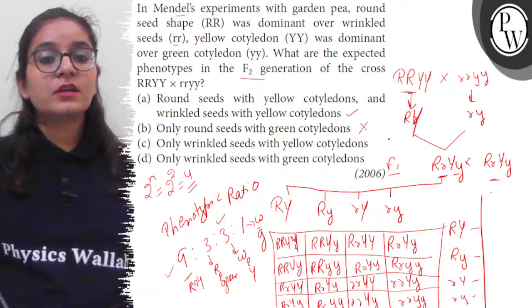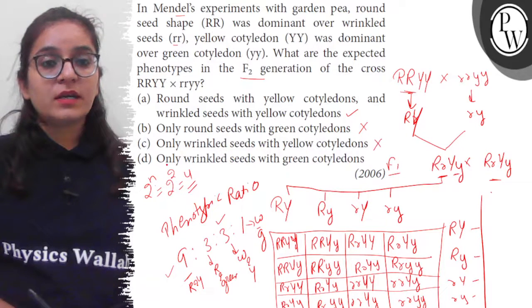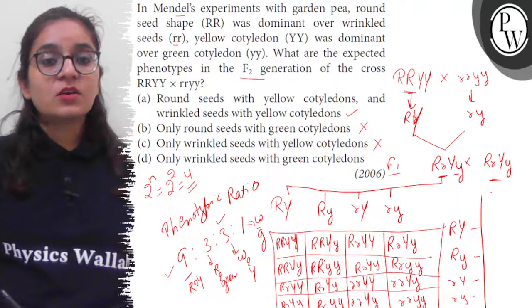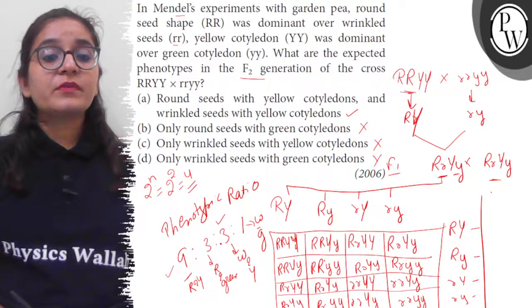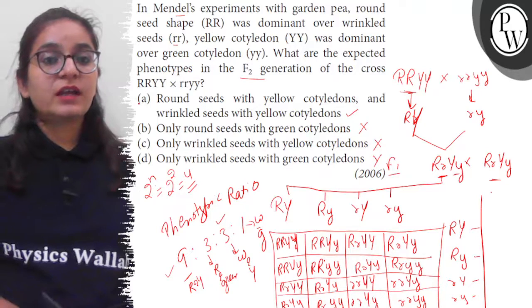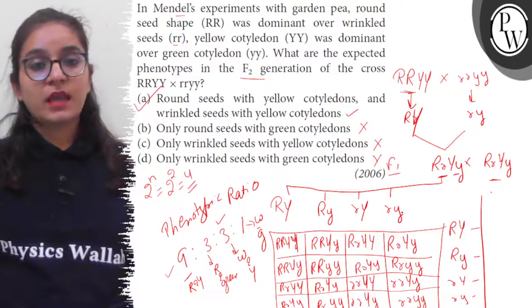Only wrinkled seeds with yellow cotyledon? No, not only. Only wrinkled seeds with green cotyledon? No. Here four different types of seeds are produced. So the correct answer here is option A. Thank you.